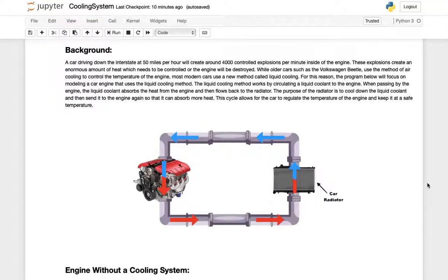There's a few different methods to controlling this heat. One is used in older cars like a Volkswagen Beetle or modern motorcycles and it's called air cooling, but because this isn't very common we won't discuss it in this project. Instead we'll talk about liquid cooling which is used in most modern cars nowadays.